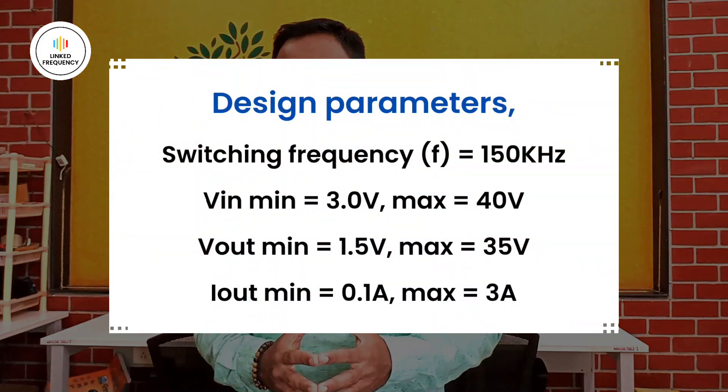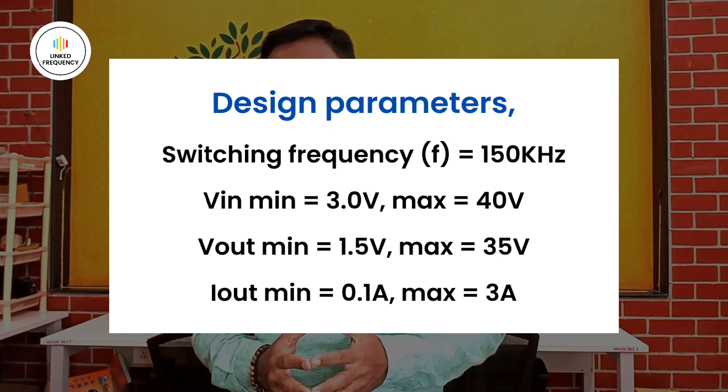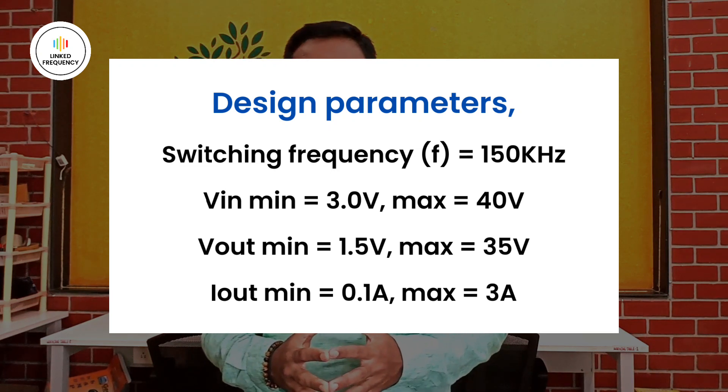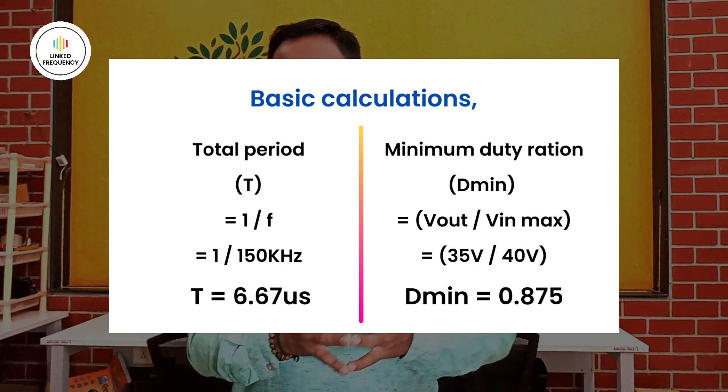Let us consider a basic example to calculate the inductance value. For simplicity, we use these design parameters: switching frequency of 150 kHz, V_in minimum = 3 V, V_in maximum = 40 V, V_out minimum = 1.5 V, V_out maximum = 35 V, and output current ranging from 0.1 A to 3 A. Based on these parameters, we calculate two basic values: the total period T and the minimum duty ratio D_min. The calculation is straightforward using standard formulas.